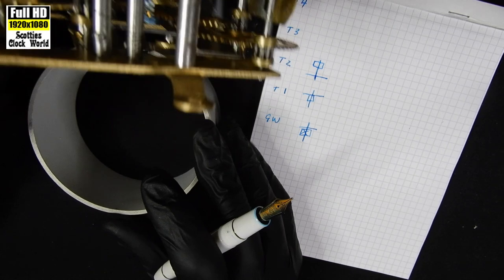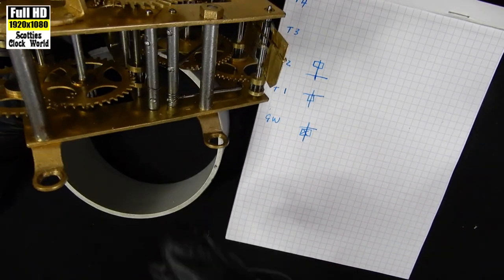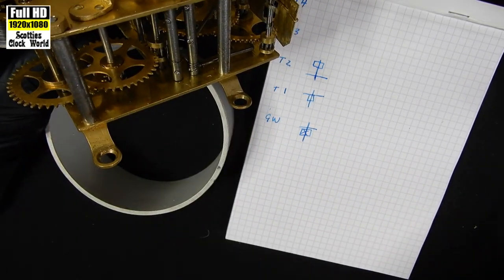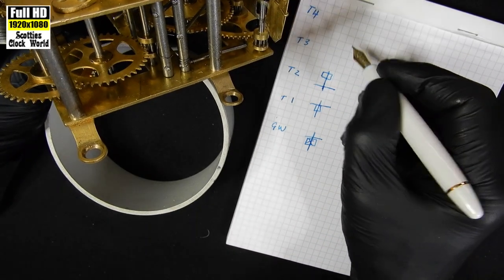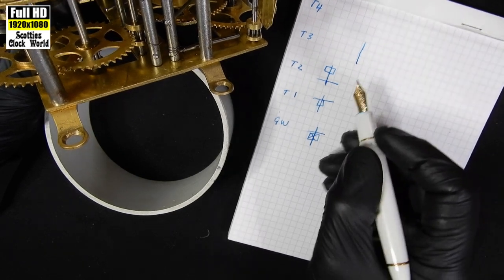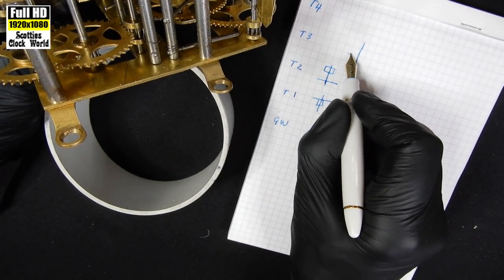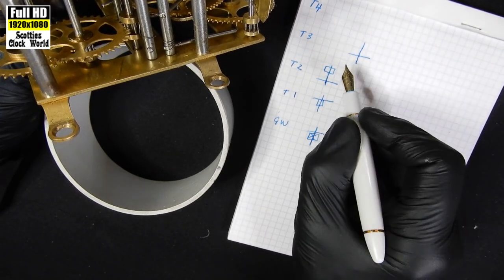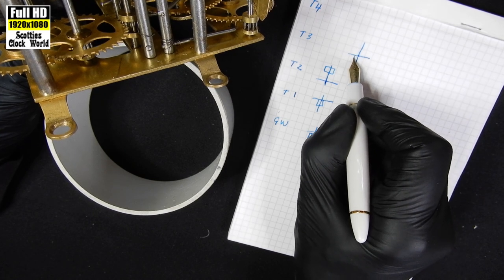Next one is the third wheel. That wheel there and what we've got there is the arbor. The wheel is down at the bottom and below that is the pinion.